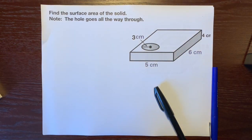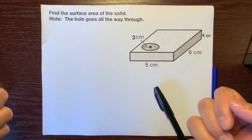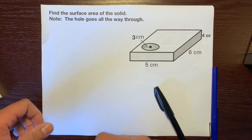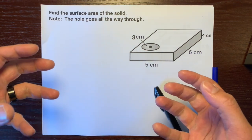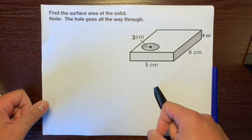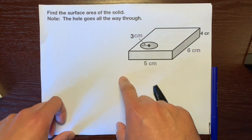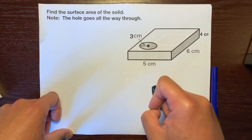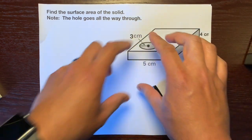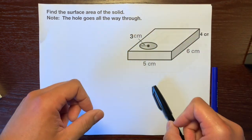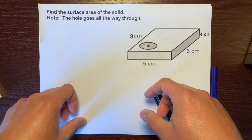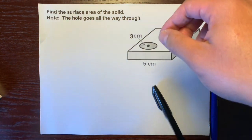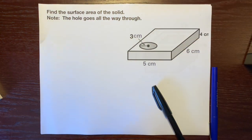Hello, this is Mr. Quiñonola and I'm going to help you find the surface area of a solid with a hole that goes right through it. So let's look at this shape right here. This is a rectangular prism and it has a cylindrical hole that goes right through it.